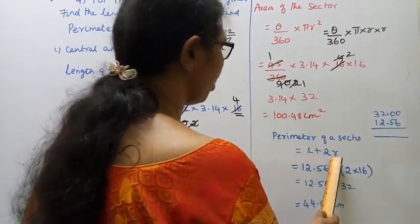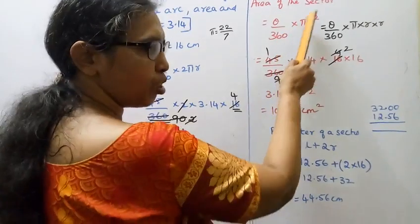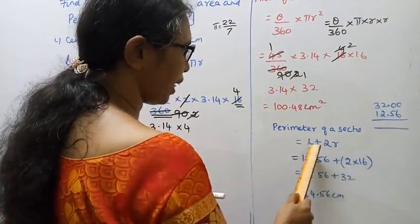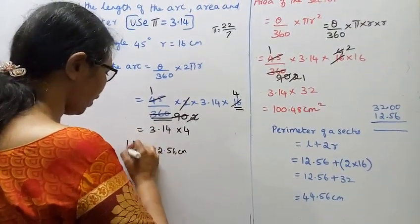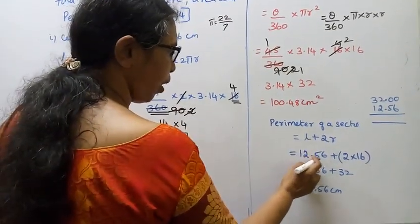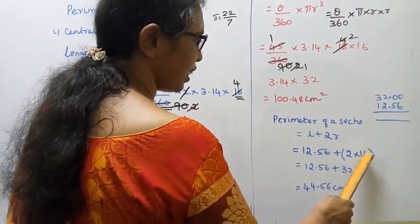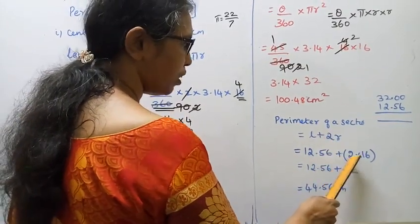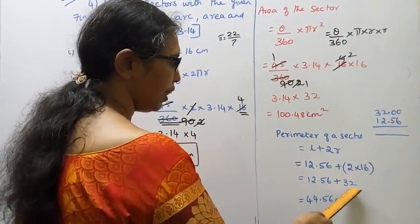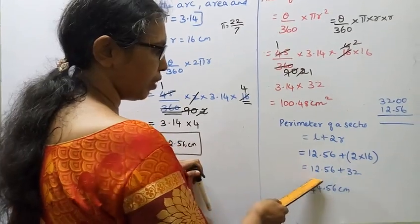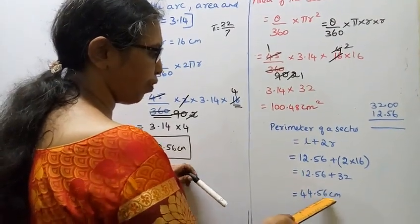Perimeter of a sector formula: L plus 2R. The length of arc L we already found. So: 12.56 plus 2 into 16 = 12.56 plus 32 = 44.56 centimeters. The perimeter is 44.56 centimeters.